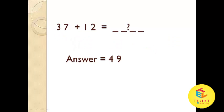What is 37 plus 12? We will do it in such a way: 3 plus 1 is equal to 4, and 7 plus 2 is equal to 9. So the answer is 49.